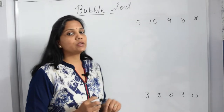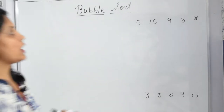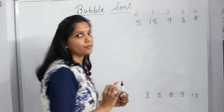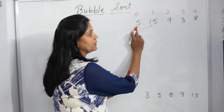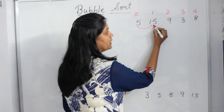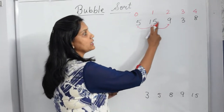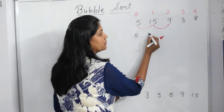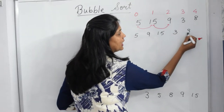The way you do it using bubble sort is: first take the first element. We have indexes 0, 1, 2, 3 and 4. Compare the first element with the second element — if the first is greater, swap it; if not, leave it. Then compare the second element with the third element. Because the second element (15) is greater than the third (9), we swap the two values and the new array becomes 5, 9, 15, 3 and 8.